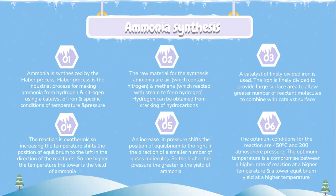Let's look into the process of ammonia synthesis. Ammonia is synthesized by the Haber process. The Haber process is the industrial process for making ammonia from hydrogen and nitrogen, using a catalyst of iron under specific conditions of temperature and pressure. The raw materials for the synthesis of ammonia are air, which contains nitrogen, and methane, which reacts with steam to form hydrogen. Hydrogen can also be obtained from cracking of hydrocarbons.